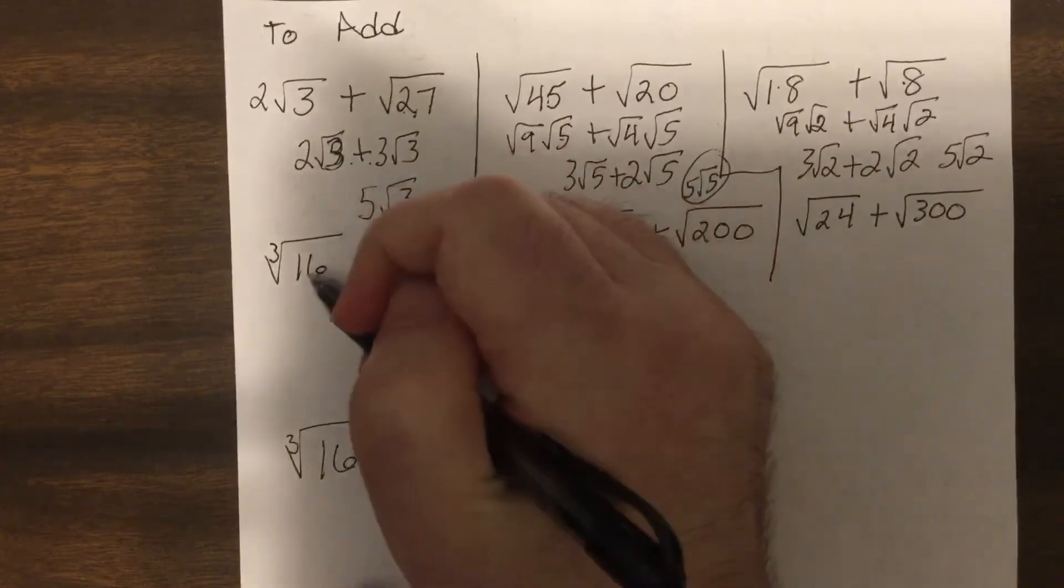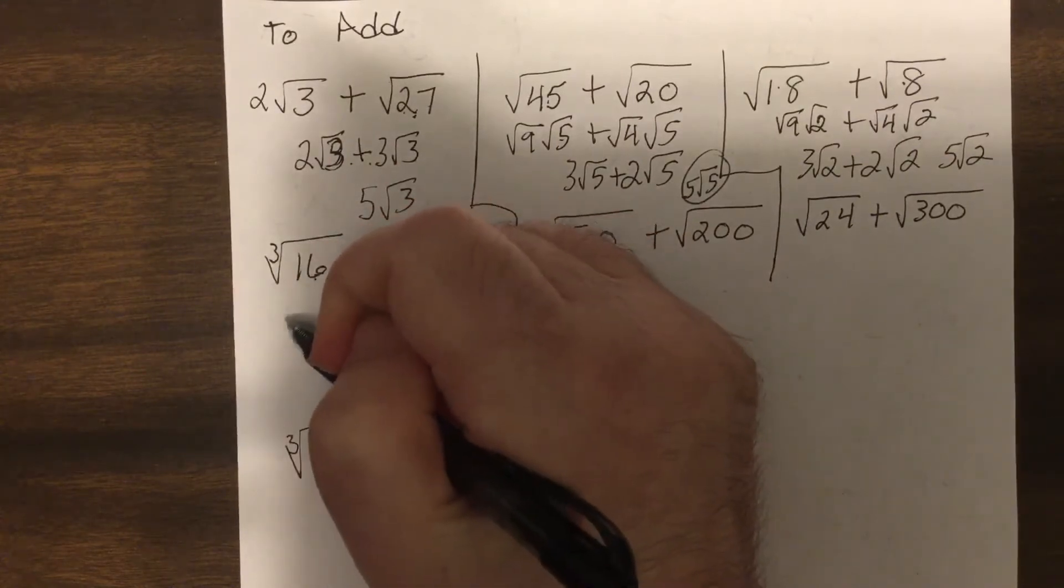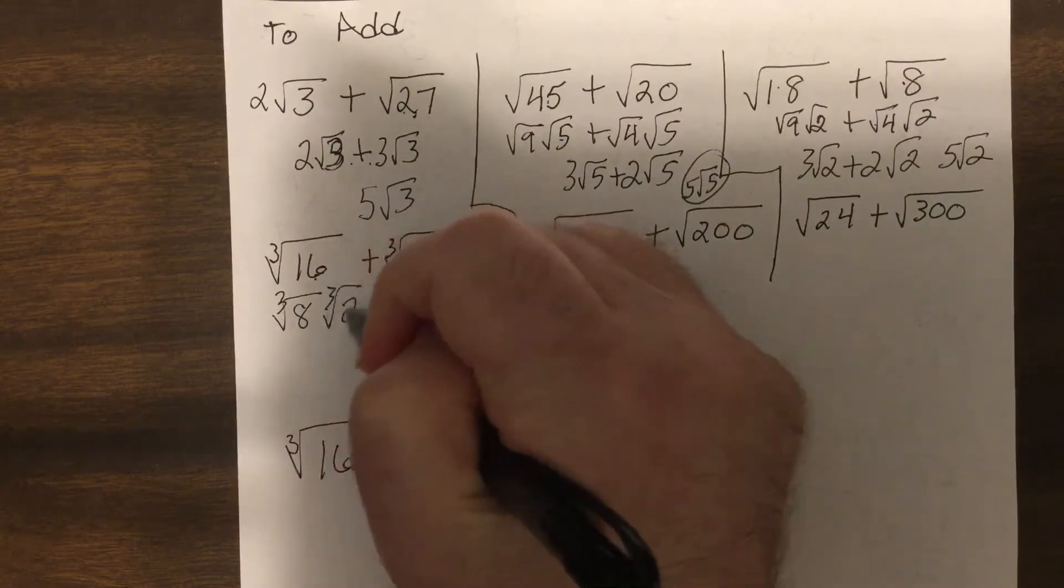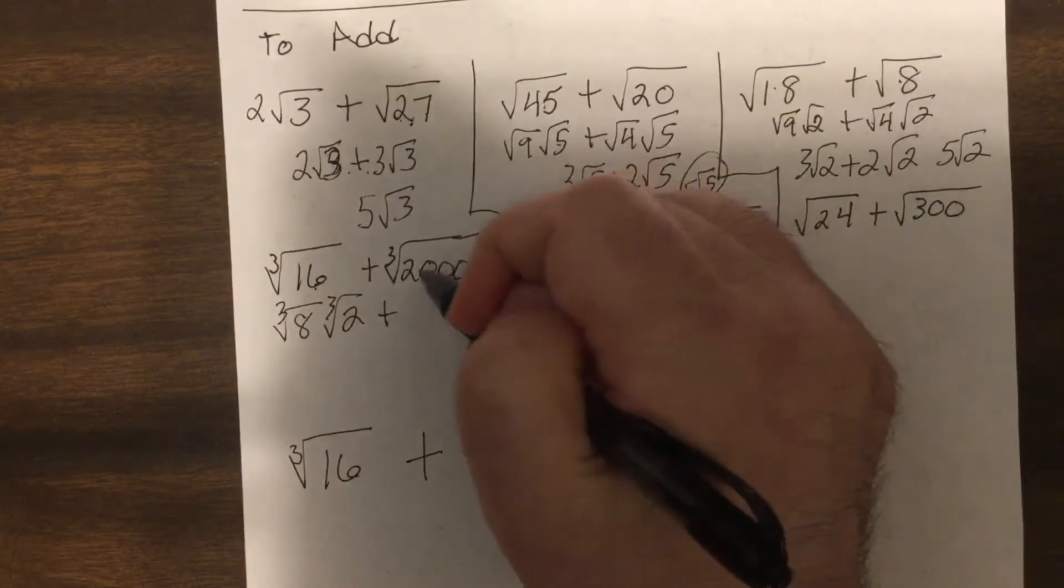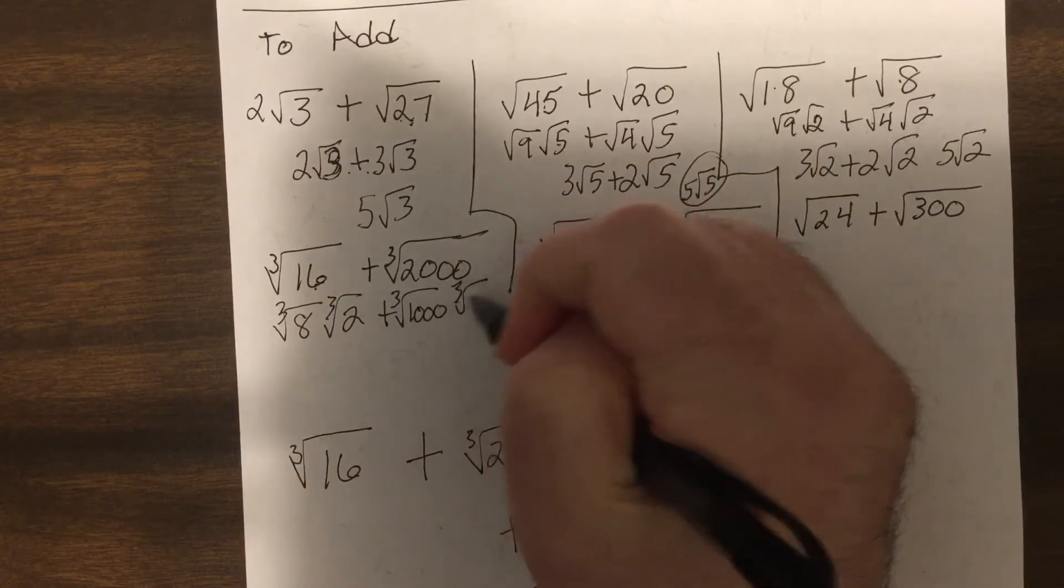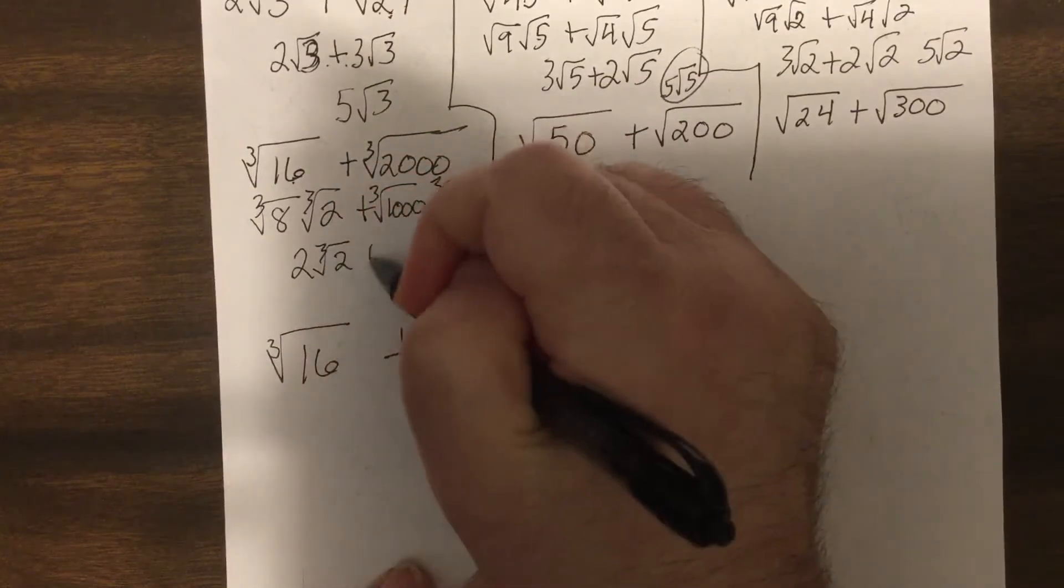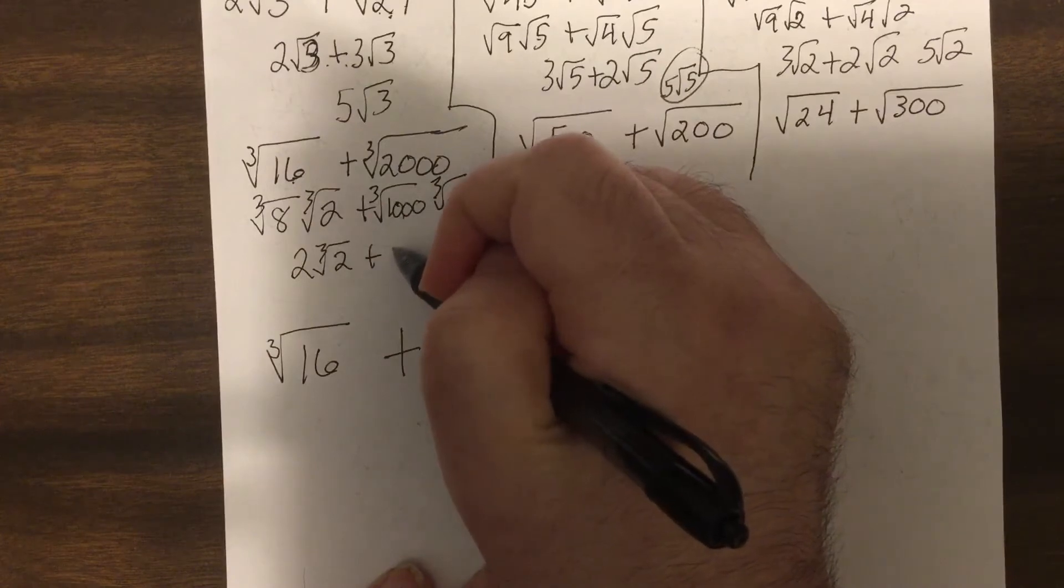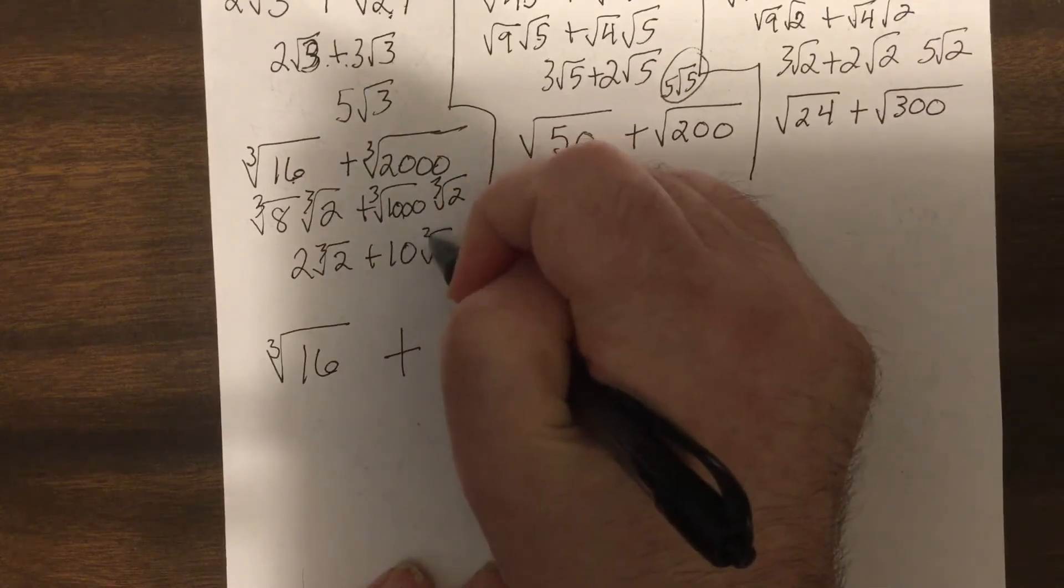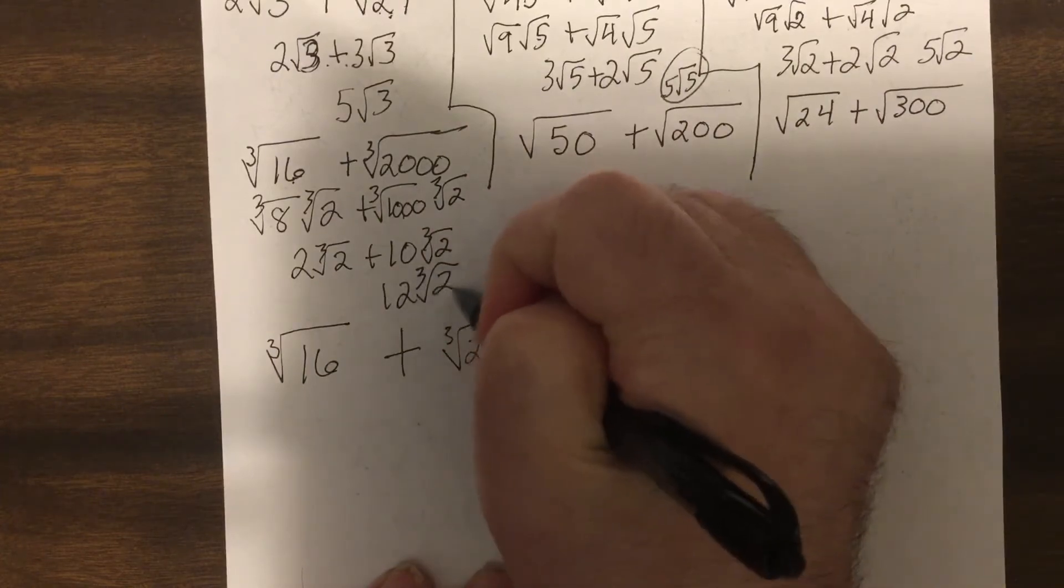Okay. I need a perfect cube. Well, two cubed is eight. Is eight going to 16? It sure does. And, well, there's three zeros. So hopefully you see that's a thousand. Then cube root of eight is two. Cube root of a thousand is 10. So that would be 12 cube root of two.